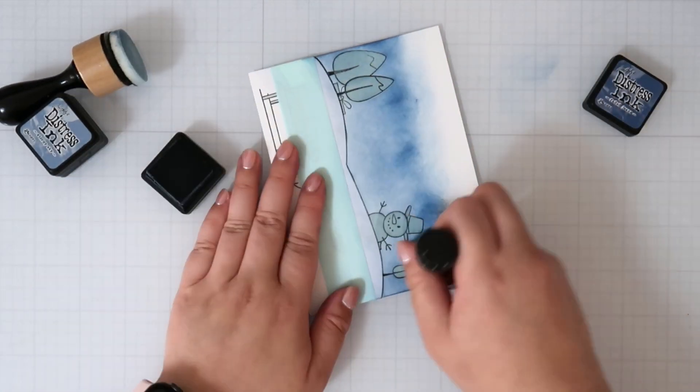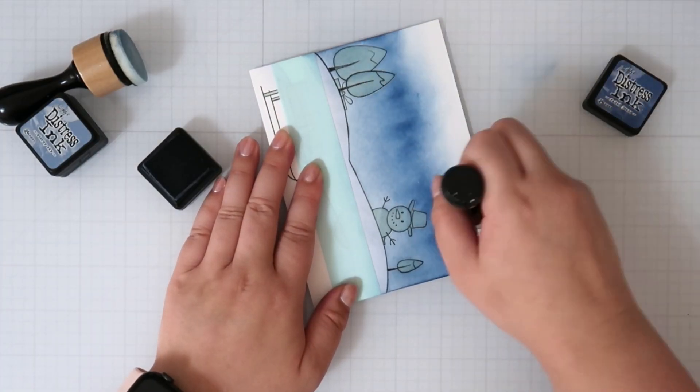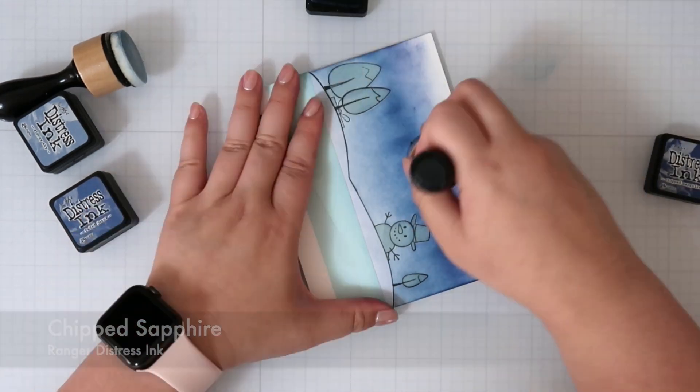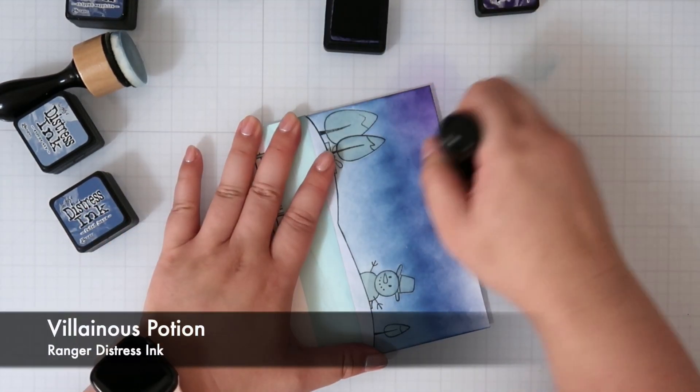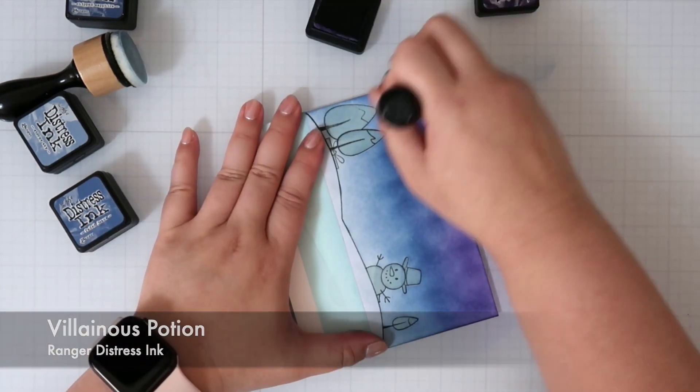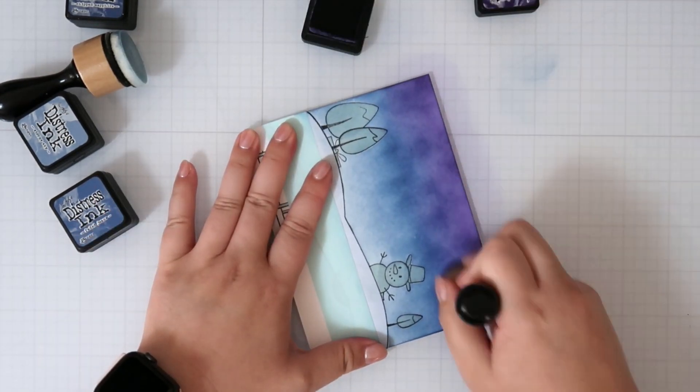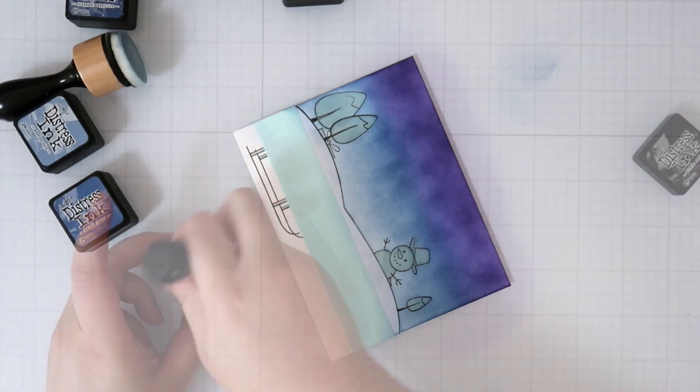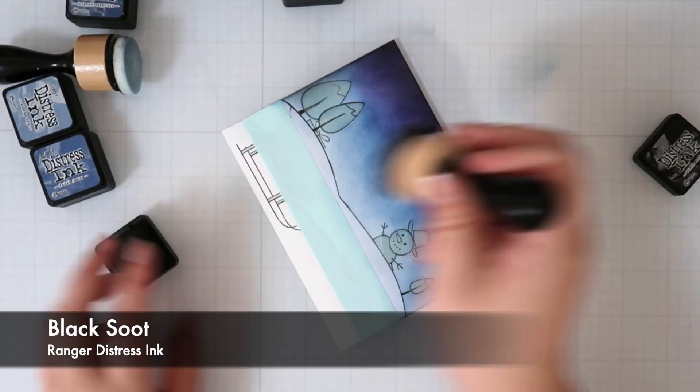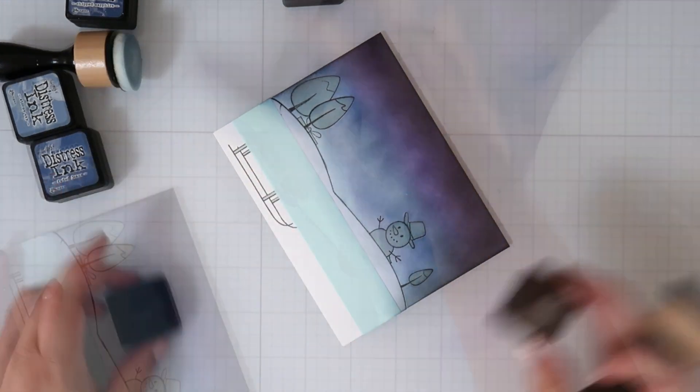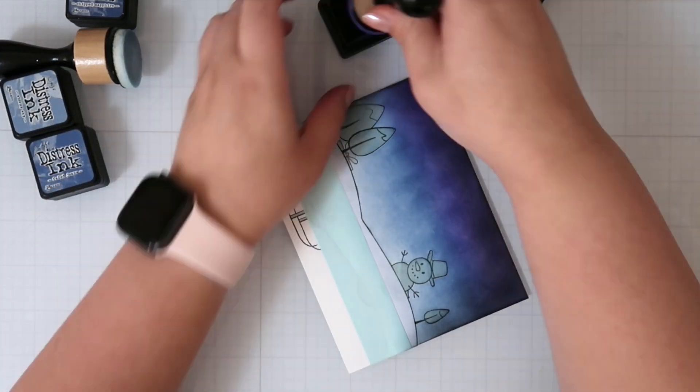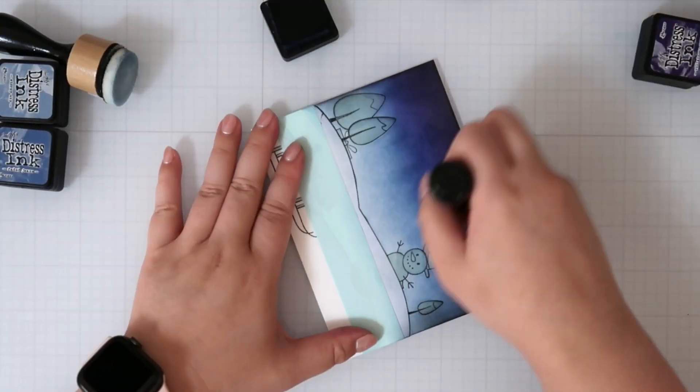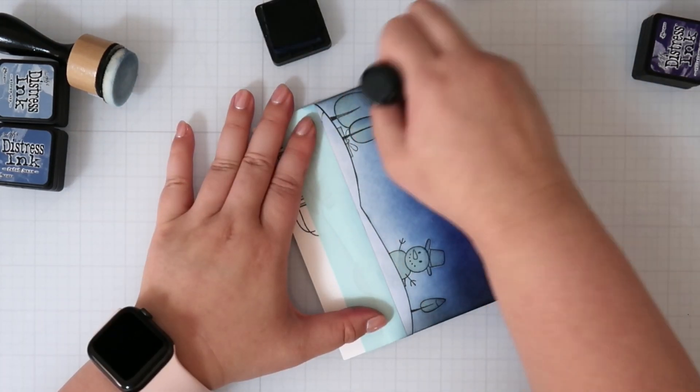I'm blending on Neenah Solar Crest 80-pound cardstock, which I don't find the easiest to blend on. If you want success blending on Neenah Solar Crest paper, you have to really saturate the paper. I'll go over it a couple of times to make sure the colors are all blended. As I get to the darker colors, you can see the choppiness, but that will go away. I'm also going to be stamping on top of it and adding white gel pen everywhere.